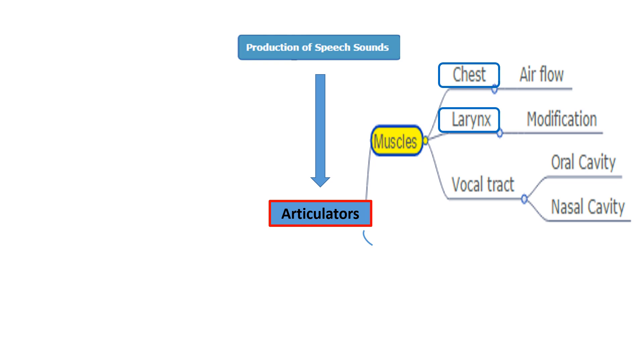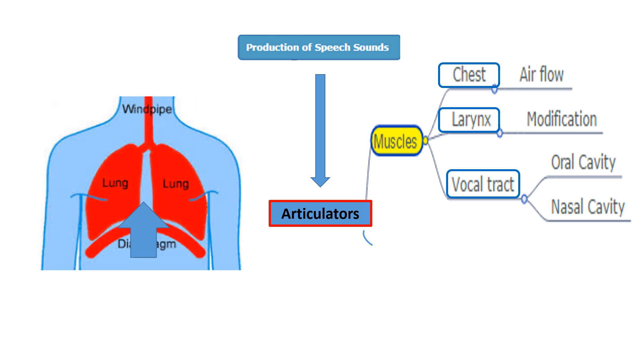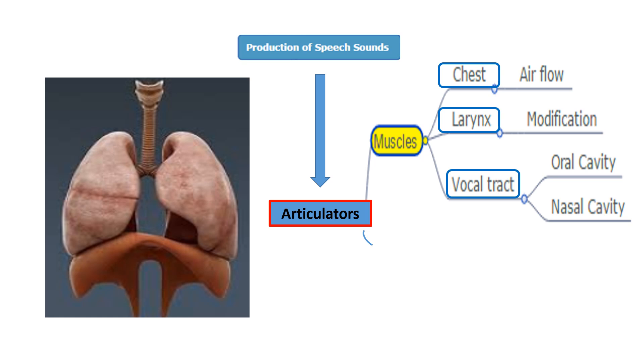The muscles of the chest control the airflow. The larynx modifies the airflow to produce the different sounds. The air escapes through the vocal tract, which escapes the oral cavity or the nasal cavity. The diaphragm pushes the lungs up, expelling the air through the windpipe, through the larynx and the vocal tract.